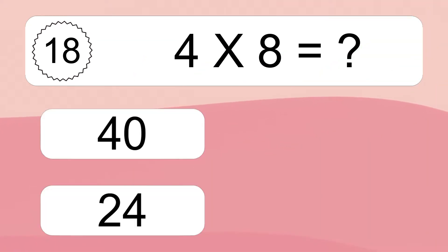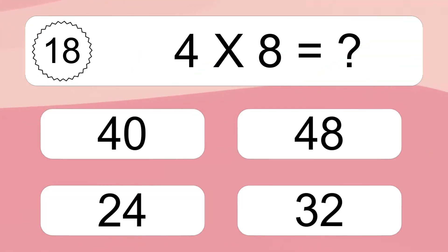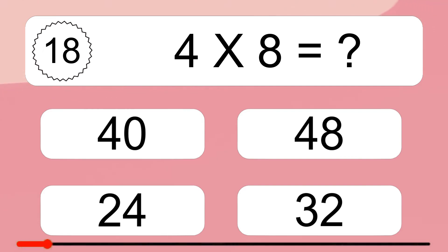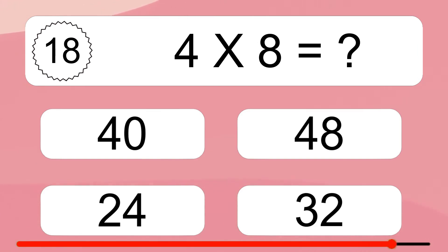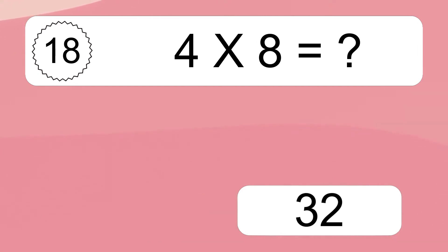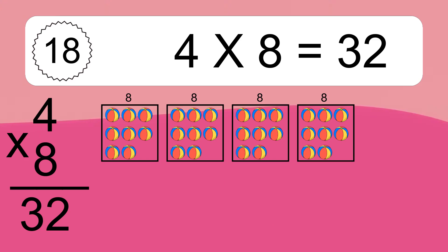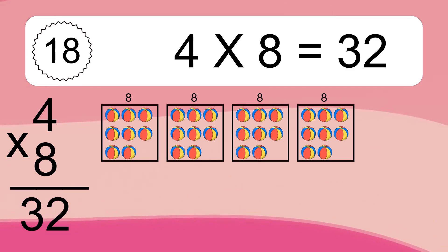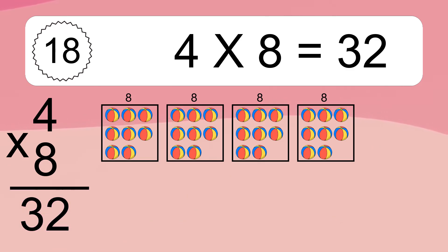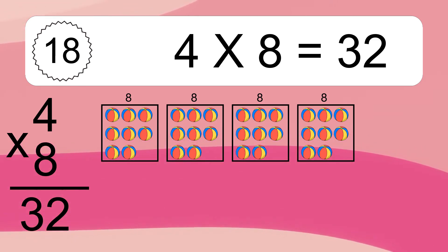Four times eight equals what? Four times eight equals 32. We have four boxes and each box has eight colorful balls inside. If you count all the balls in all the boxes together, you will have four times eight balls. This equals 32 balls.